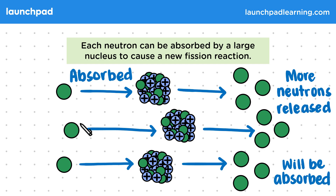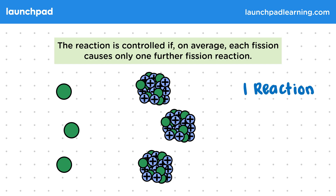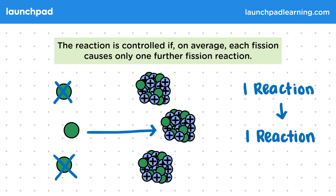So what does it mean to have a controlled chain reaction? The reaction is controlled if, on average, each fission causes only one further fission reaction. We start with one reaction that releases three neutrons. To control the reaction, two neutrons must be removed — absorbed by non-fissile nuclei — so only one successive reaction can happen. There is a continuous chain of single reactions, as one neutron causes only one reaction and one neutron goes on to take part in the next reaction.